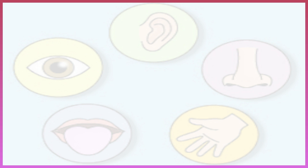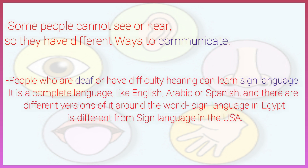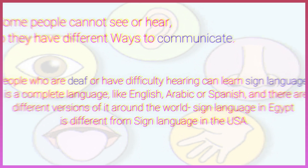Some people cannot see or hear, so they have different ways to communicate. People who are deaf or have difficulty hearing can learn sign language. It is a complete language, like English, Arabic, or Spanish, and there are different versions of it around the world. Sign language in Egypt is different from sign language in the USA.